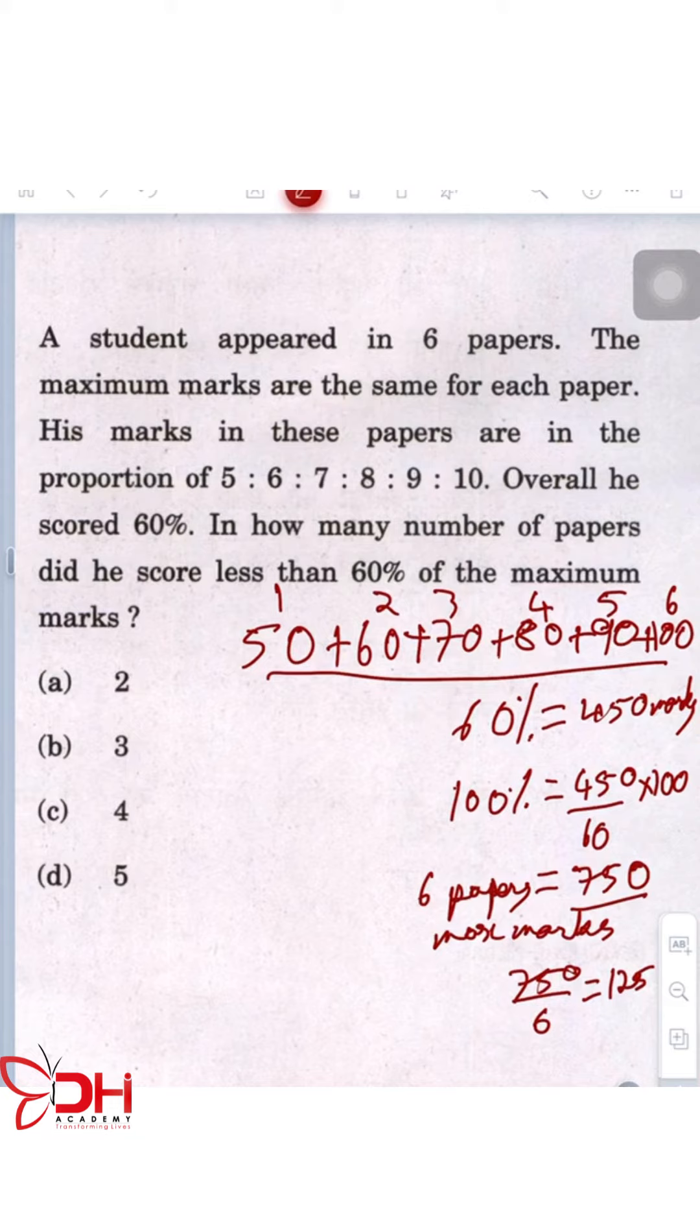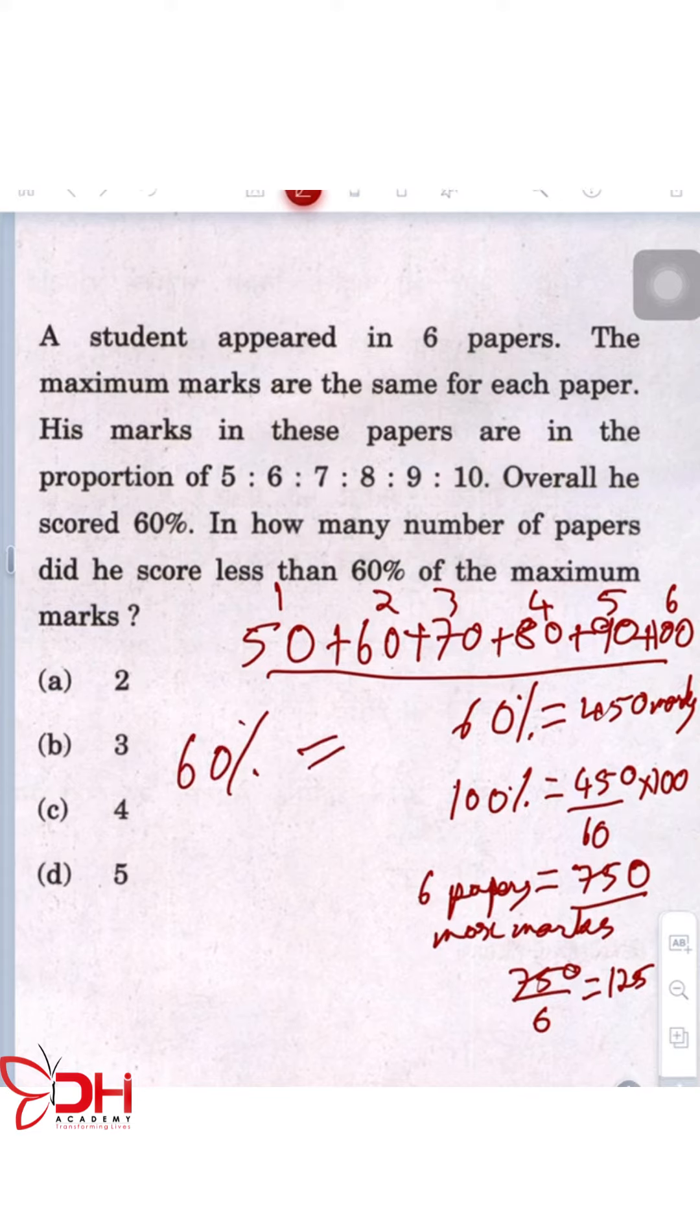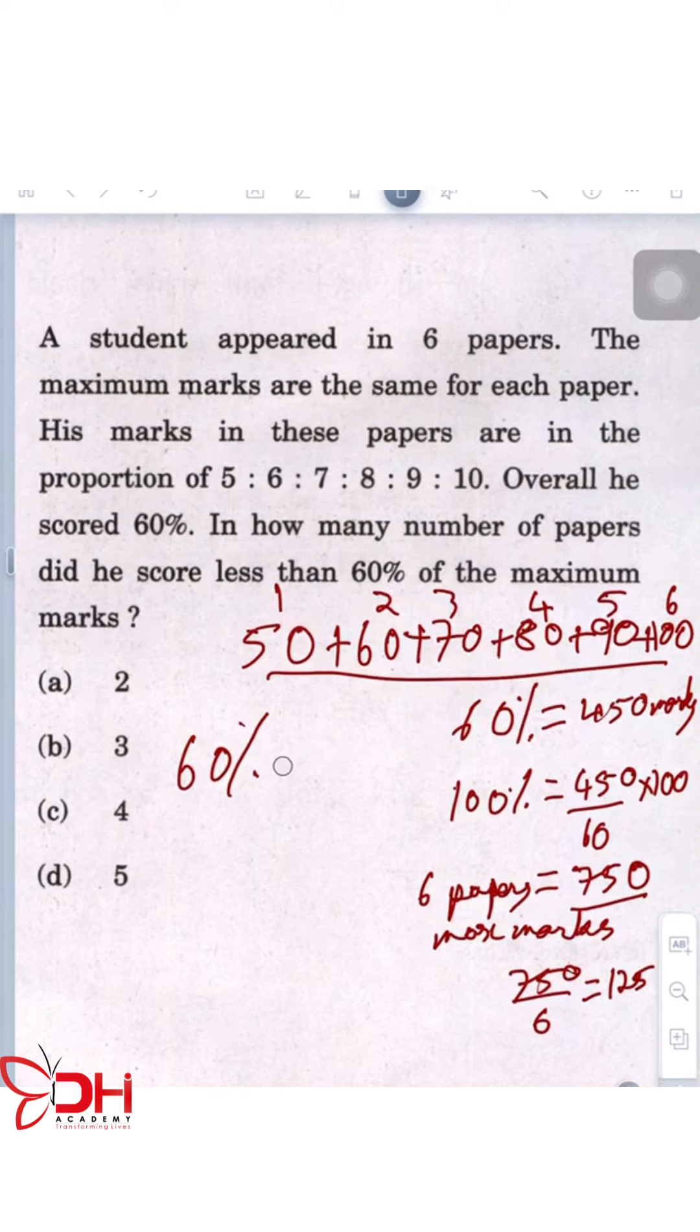Now the question is saying overall he has scored 60%. So what is 60% of 125? It is going to be 75.